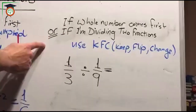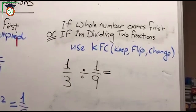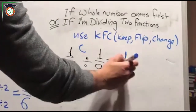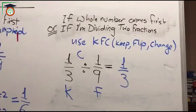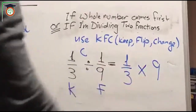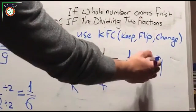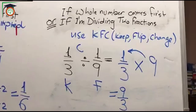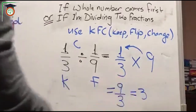Now if I'm dividing two fractions — for example, 1 over 3 divided by 1 over 9 — I use the same KFC technique: Keep, Flip, Change. The 1 over 3 stays the same. I flip 1 over 9: I put 9 above and 1 below, giving 9 over 1, which is just 9. I change the sign to multiplication, so it becomes 1 over 3 multiplied by 9. The whole number 9 goes to the denominator, giving 9 over 3. What's 9 divided by 3? It's 3, because 3 times 3 is 9.